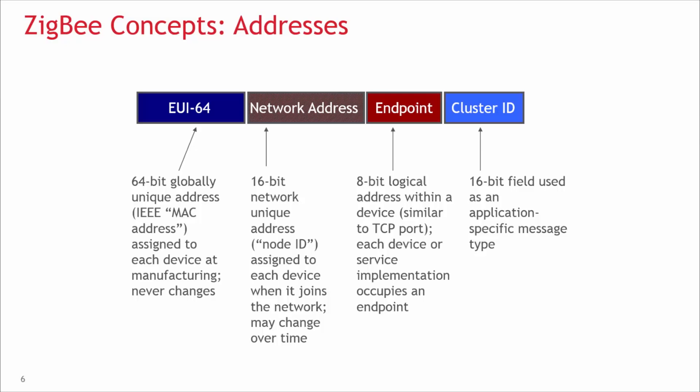In addition to the addresses of the node, there are also concepts of addresses within the node. An 8-bit endpoint defines each application running on a Zigbee node, and a Zigbee node contains one or more endpoints. With the concept of endpoints, different application profiles and multiple logical devices can exist within one physical device. Furthermore, each endpoint can support the functionality of one or more clusters. The cluster ID is a 16-bit value used as an application-specific message type. To learn more about endpoints and clusters, please check out Part 5 of the Zigbee Concepts video series.